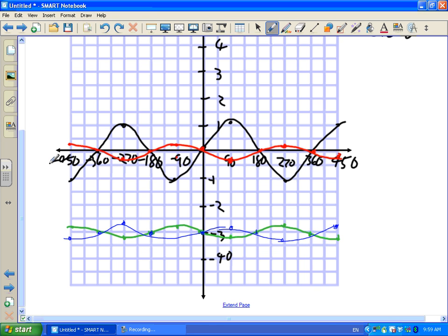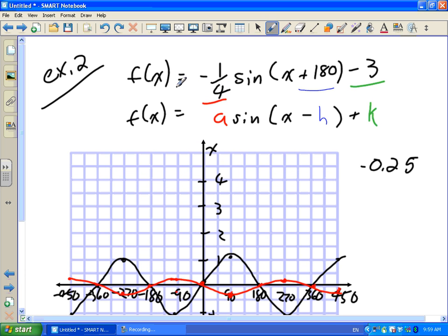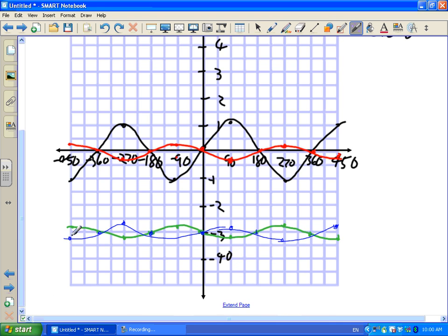So it almost looks like we flipped this wave twice. We flipped it once because A was negative. And the shift of 180 degrees made it look like we flipped the wave again. So our final answer was the blue one here. Compressed, flipped, and shifted 180 degrees. This wave looks much different from where we started.